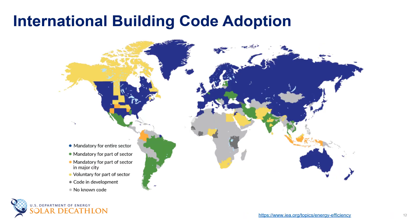Let's look beyond the United States and at building code adoption around the world. We can see that building codes exist in most of North America, Europe, and Oceania. In Asia, South America, and Africa, some countries have mandatory or voluntary building codes while others have none at all.